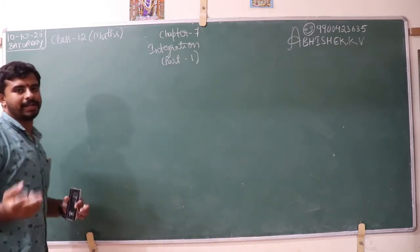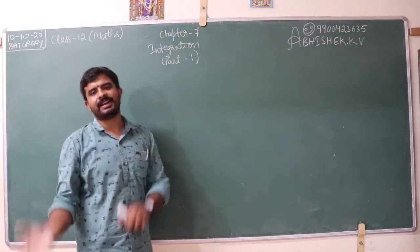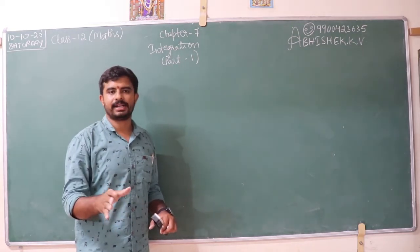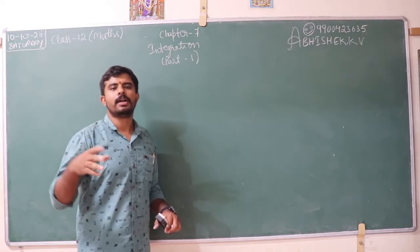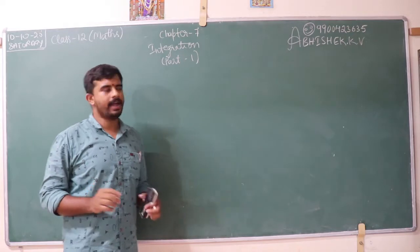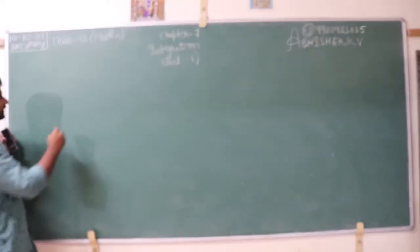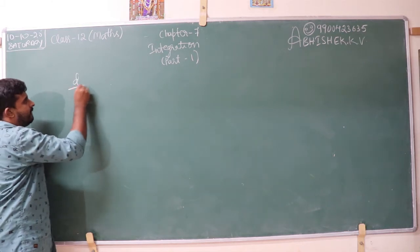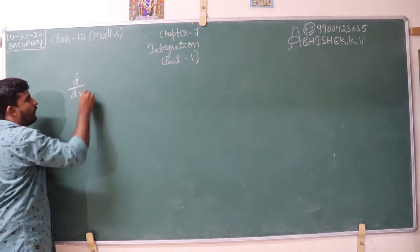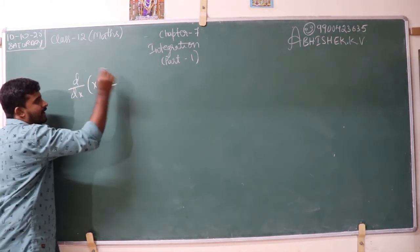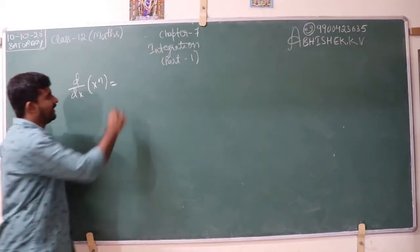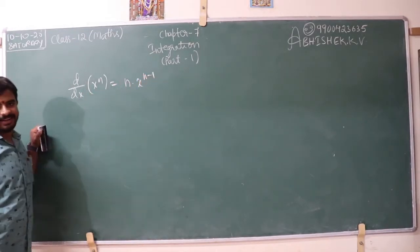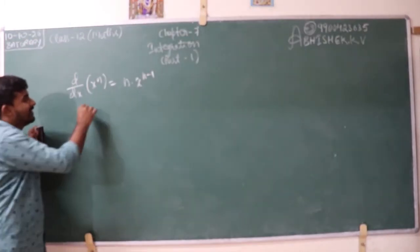We have two types: indefinite integral and definite integral. Today I am going to lecture about the indefinite integral; we will talk about the definite integral later. Now, if I consider the derivative of x to the power n: derivative of x to the power n is n times x to the power n minus 1.